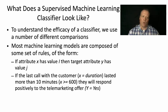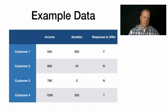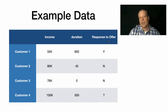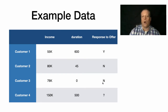Thinking of machine learning in that way will help you better understand the mechanisms we can use to calculate how good we are at solving the problem. Imagine some example data where you have income and duration — each of these customers is an instance. Each column except for the last one represents a feature of the instance, and 'response to offer' is the target class or dependent variable you're trying to predict. Here we have three instances where we know the response, and one where we don't — so can we figure out a way to predict it from the other examples?